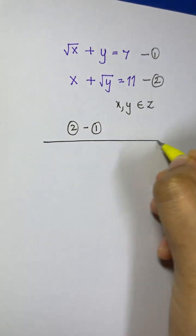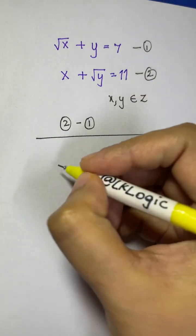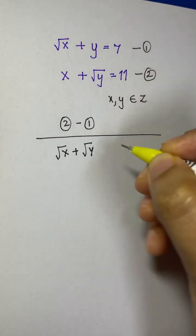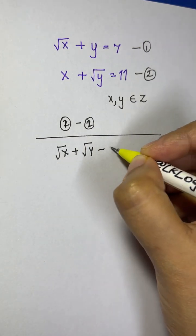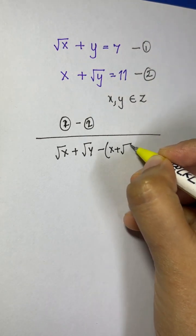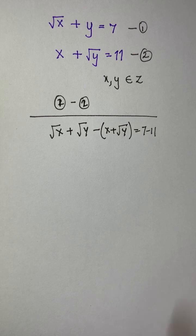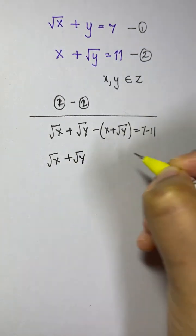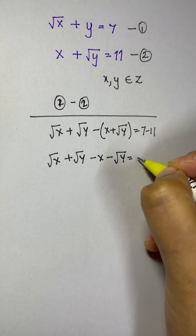When you do equation one minus equation two, you get root x plus y minus of x plus root y equals 7 minus 11. Opening up the brackets: root x plus root y minus x minus root y equals negative 4.